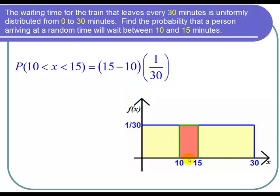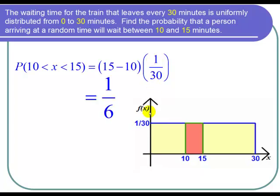Times the height, and the height is 1 over 30. So then 15 minus 10 is 5 divided by 30, which is 5 thirtieths, or we can reduce and we can say the probability is 1 sixth. And now I can state my conclusion.